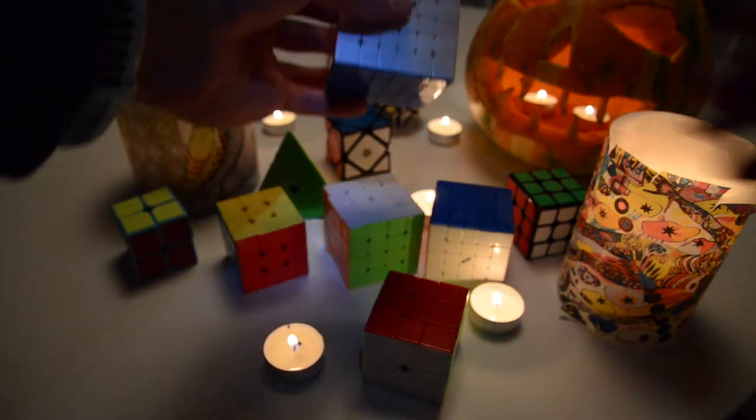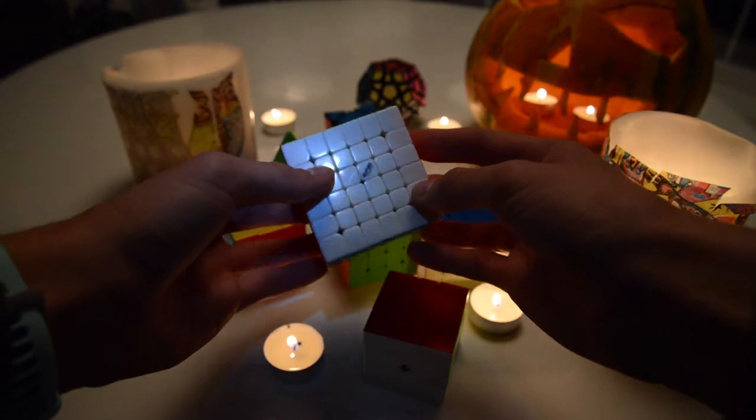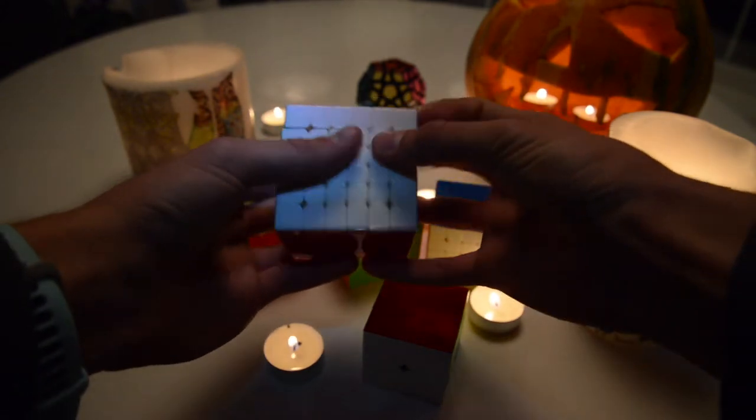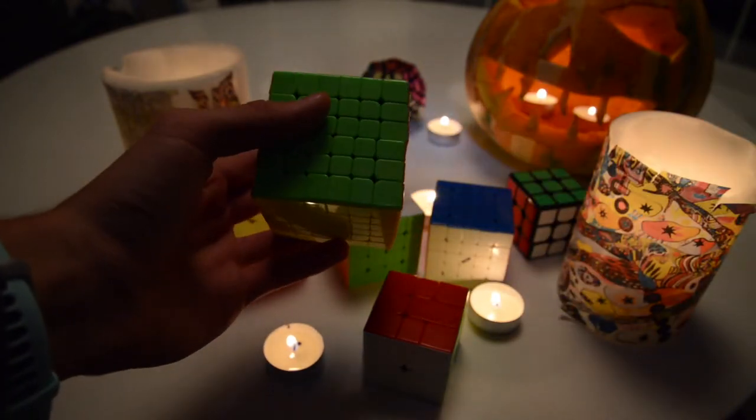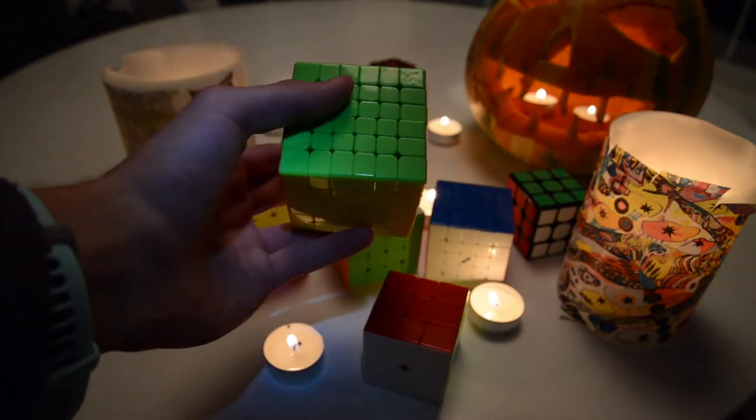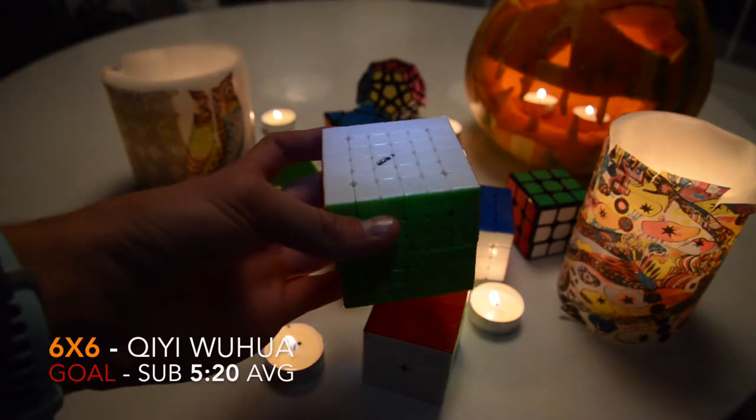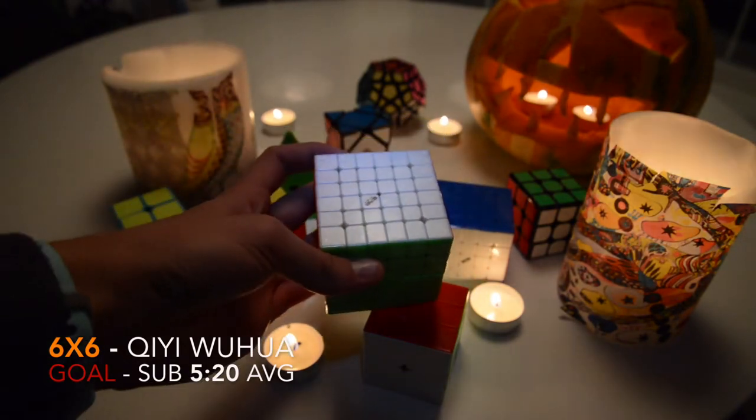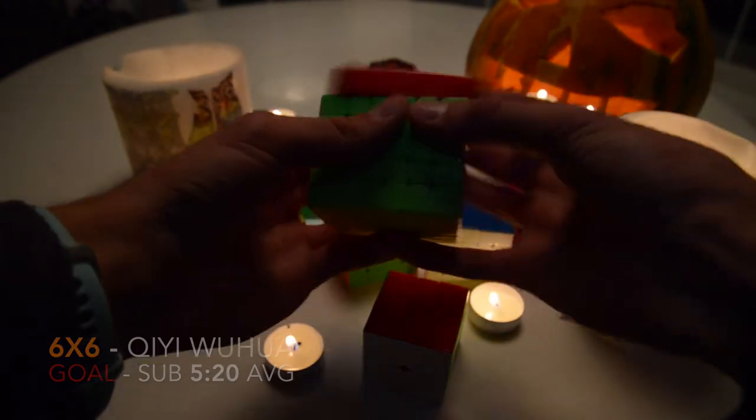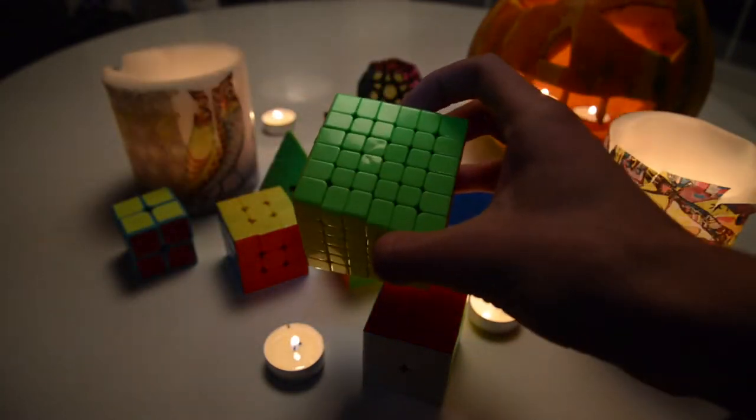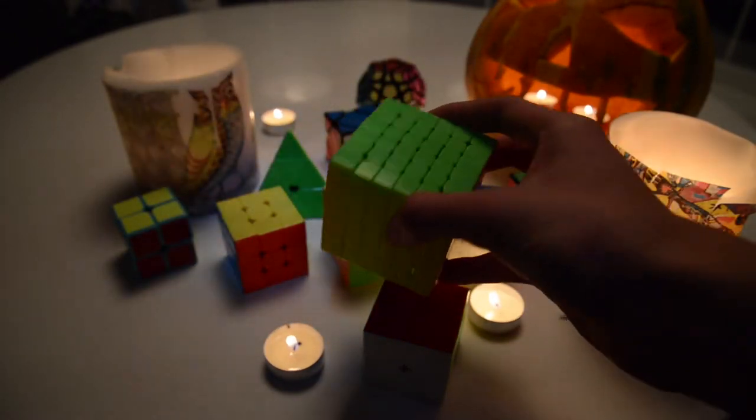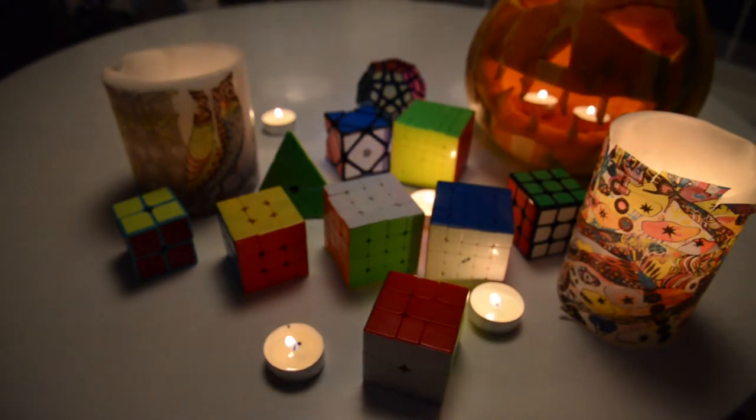Next up it's the 6x6. I'm using the Wuha Qi Wuha stickless 6x6 and my goal is to get sub 5 single and sub 5:20 average. This cube is very nice. When it comes to 7x7, I'll be using somebody's 7x7 if I get it. I don't have a goal because I suck at it.